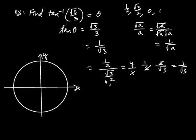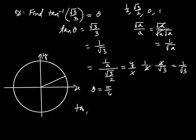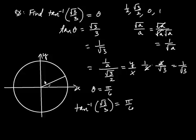I can write 1 over root 3 as 1/2 divided by root 3 over 2, regarding the numerator as y and the denominator as x. That would be an angle I'm familiar with — a 30-degree angle. Tangent of 30 degrees is 1/2 divided by root 3 over 2, because the y-coordinate is 1/2 and the x-coordinate is root 3 over 2 on the unit circle. So the angle is pi over 6 in radians. Since pi over 6 is between negative pi over 2 and positive pi over 2, which is the range of inverse tangent, this is our result.